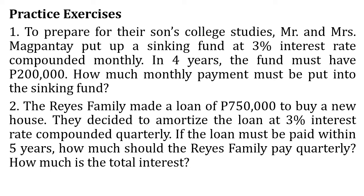Solve the following problems. Number one: To prepare for their son's college studies, Mr. and Mrs. Magpantay put up a sinking fund at 3 percent interest rate compounded monthly. In four years the fund must have 200,000 pesos. How much monthly payment must be put into the sinking fund? Number two: The Reyes family made a loan of 750,000 pesos to buy a new house. They decided to amortize the loan at 3 percent interest rate compounded quarterly. If the loan must be paid within five years, how much should the Reyes family pay quarterly, and how much is the total interest?